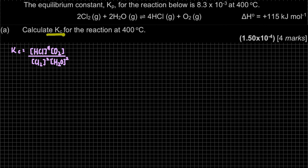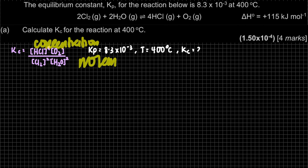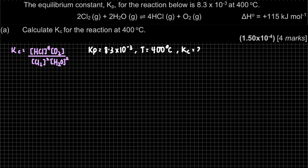We can now calculate Kc for the reaction. I'm going to extract the information given from the question. The question gives us Kp = 8.3 × 10⁻³ and temperature = 400°C, but they ask us for Kc. Kc stands for concentration — we would normally substitute concentration values, but here we don't have any concentration information. What we have is Kp.